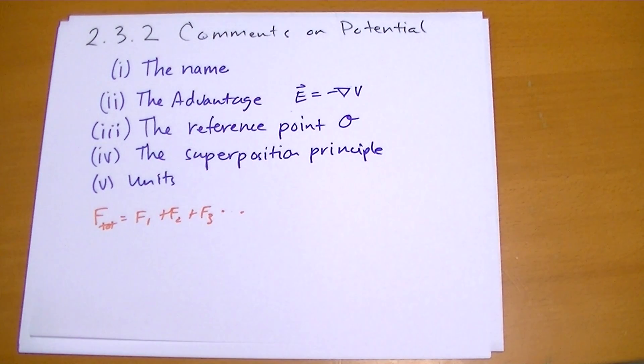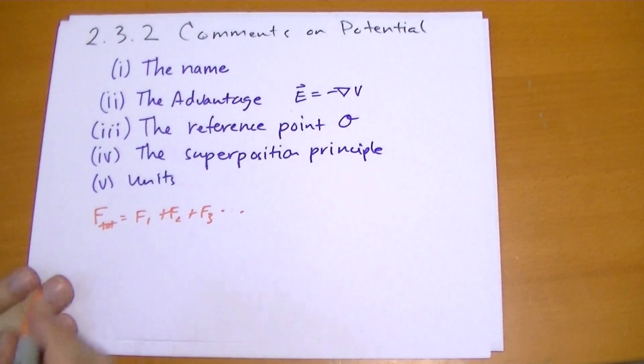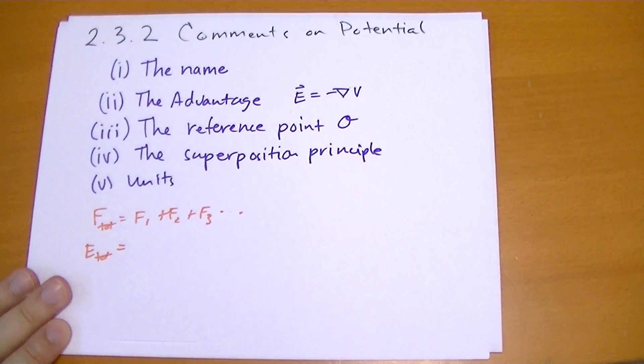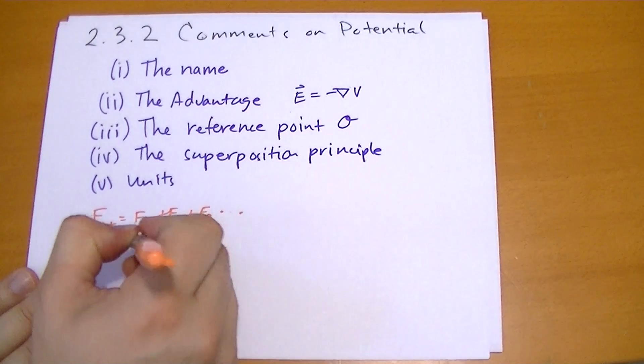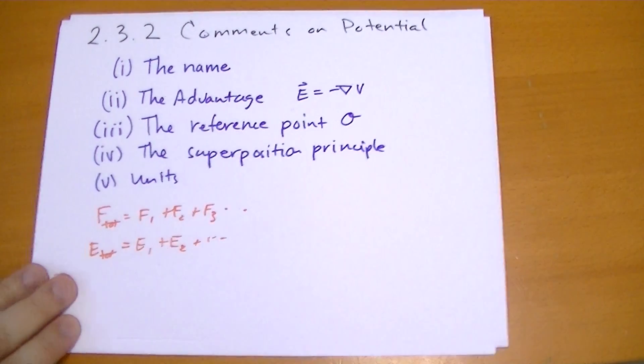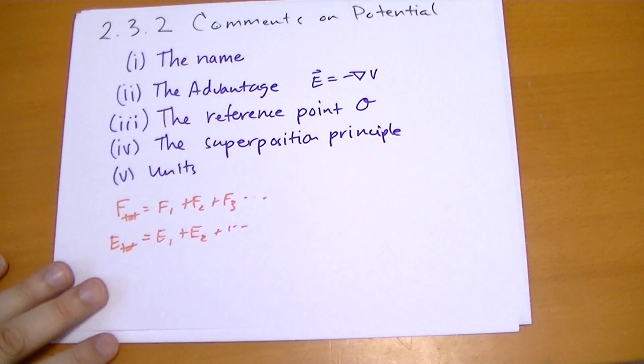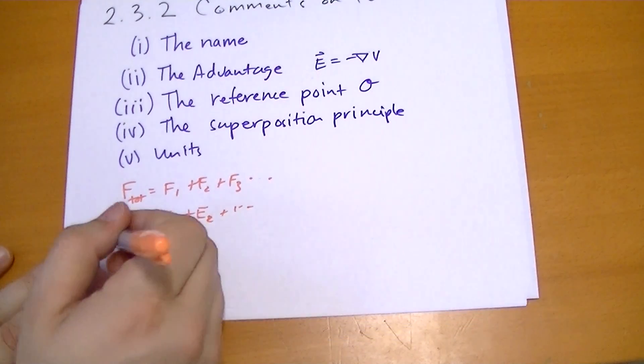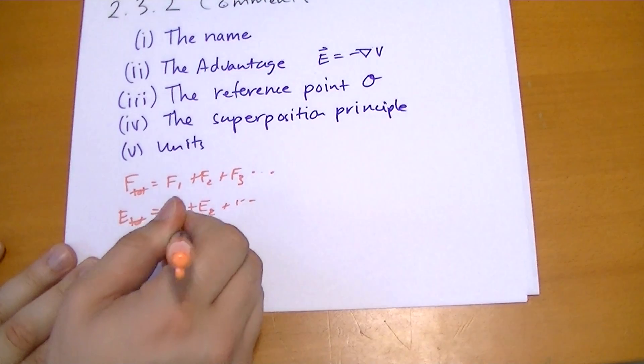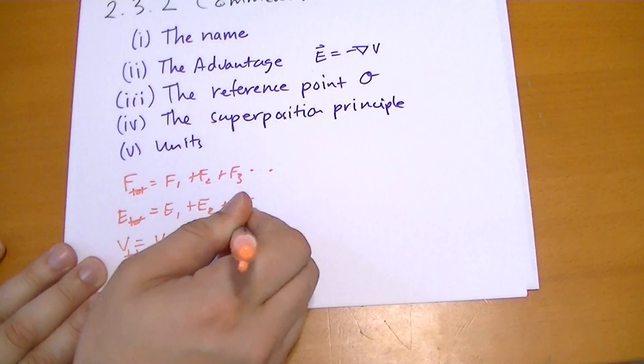The electric field is just the force divided by some charge, and so the same principle applies here. Because V is just the electric field, which is just the gradient of this potential V, the total potential is just the sum of the other potentials.